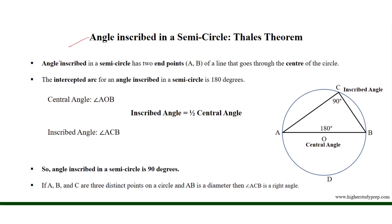An angle inscribed in a semicircle has two endpoints, for example A and B, which are the endpoints of a line passing through the center of the circle. A line through two points on the circumference and the center is the diameter, and the diameter divides the circle into two semicircles.